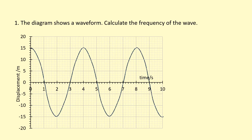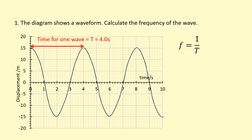Example one: the diagram shows a waveform — calculate the frequency of the wave. Looking at the graph with displacement on the y-axis and time on the x-axis, we can read the time period as four seconds. Using frequency equals one over time period: frequency equals one over four seconds, which gives 0.25 hertz — a quarter of a wave per second.